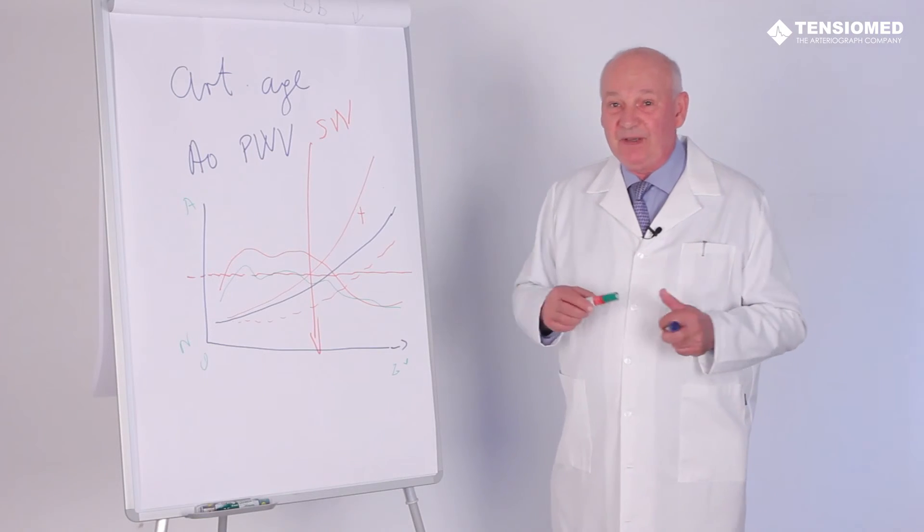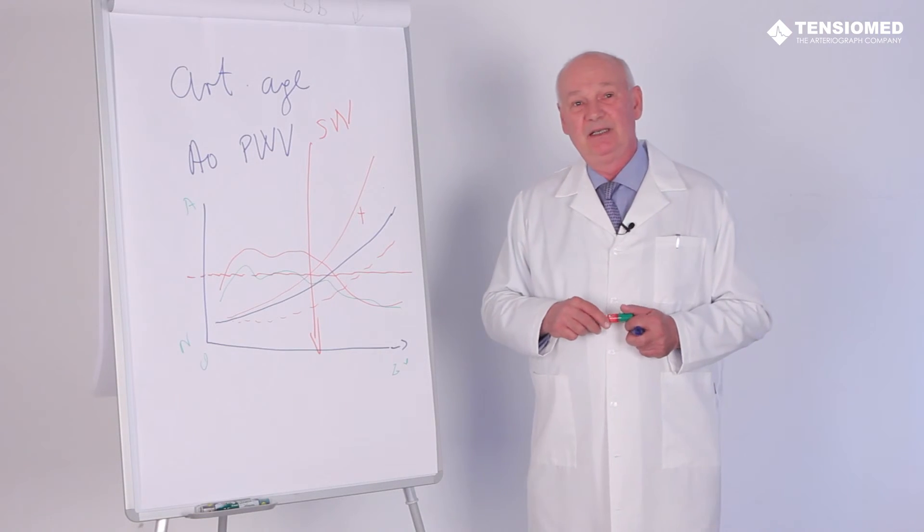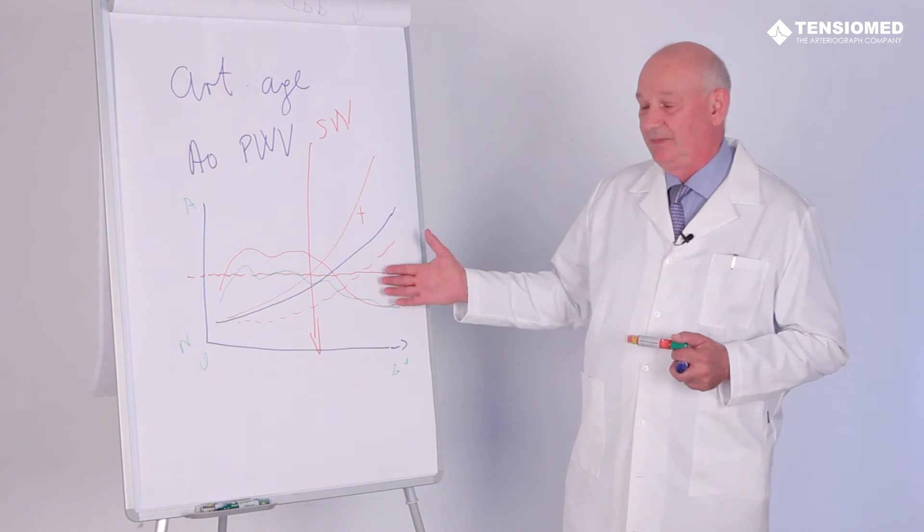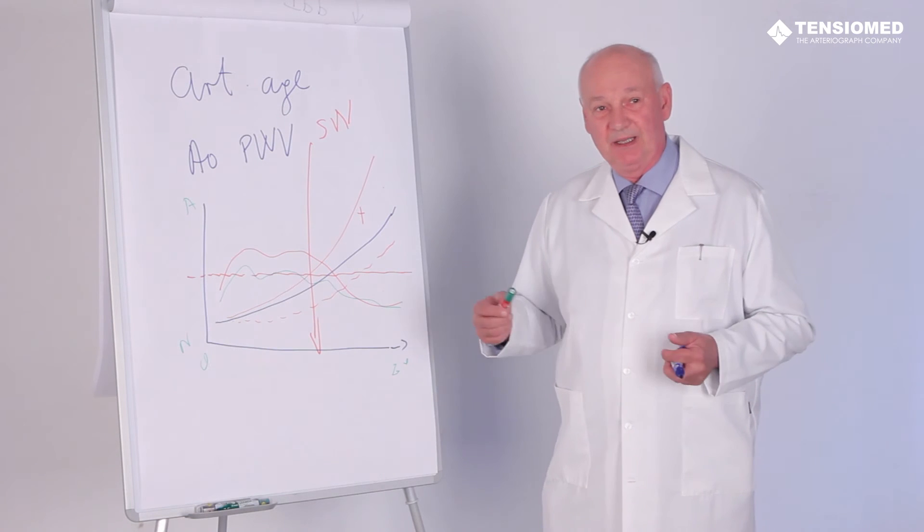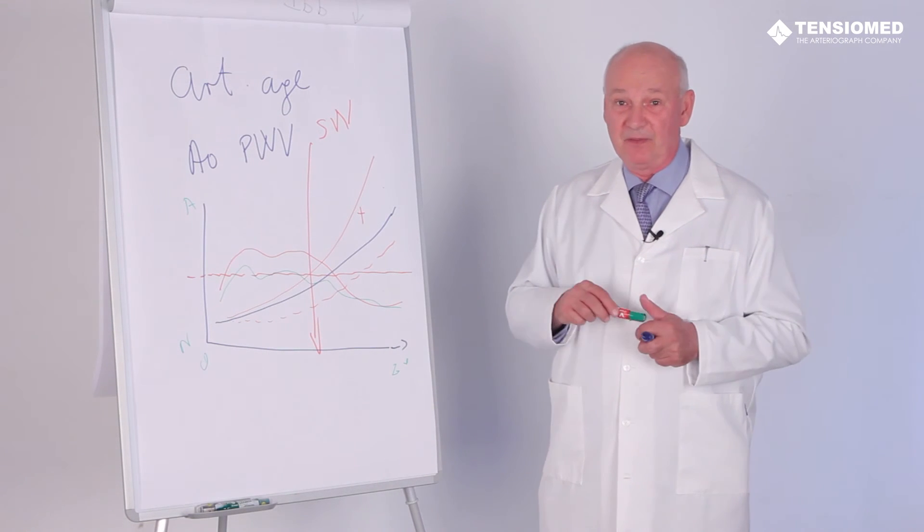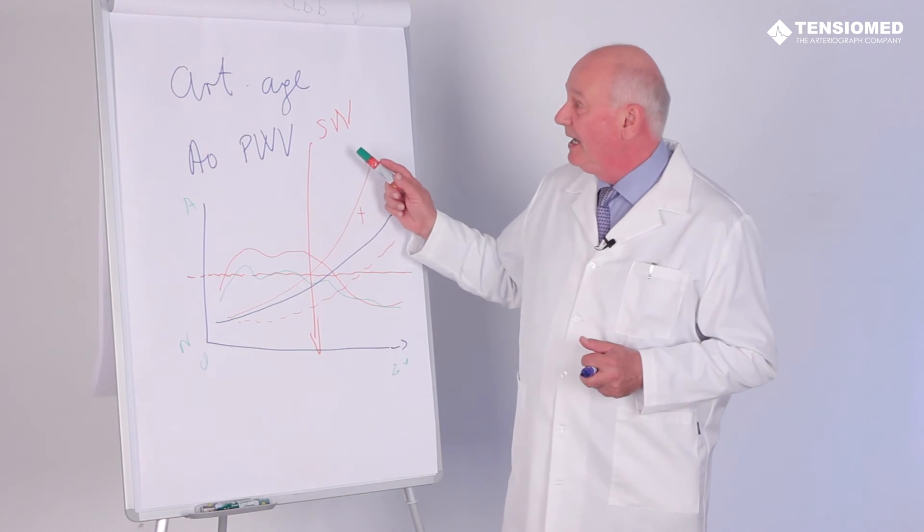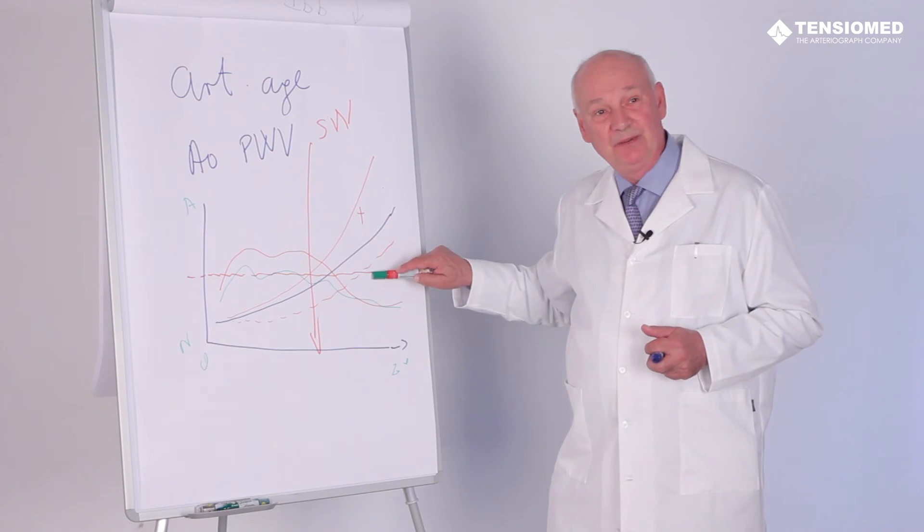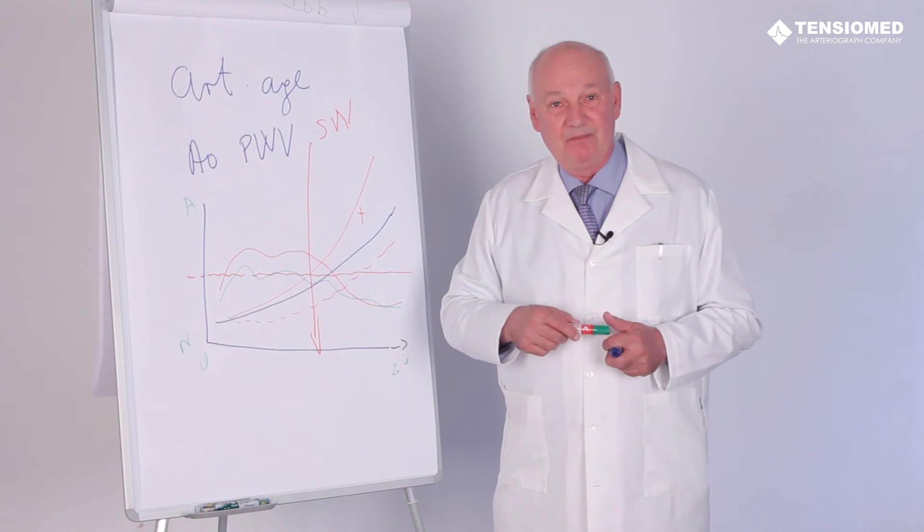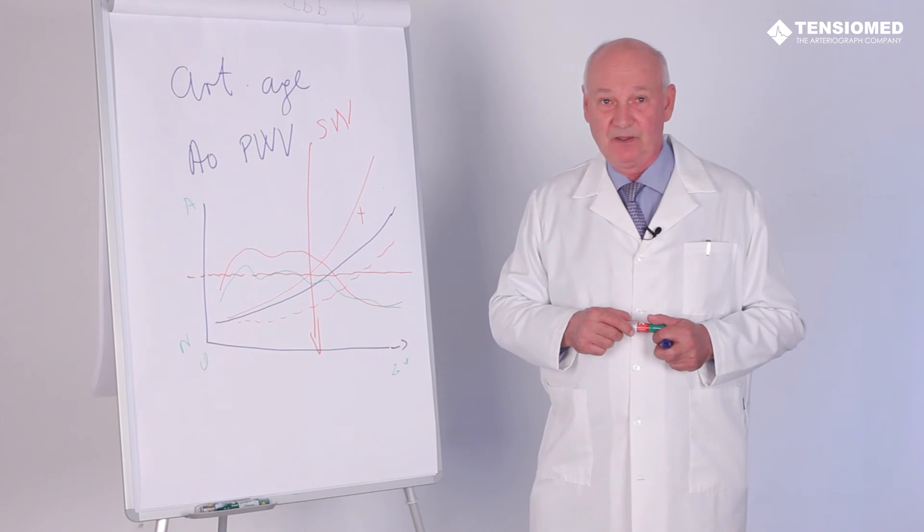Question: Could we influence our aortic or arterial age or not? We do feel and we do have data that lowering blood pressure and providing appropriate pharmacological and non-pharmacological treatment to the patient, the arterial age increase could be slowed down, which provides better life expectancy to our subjects.